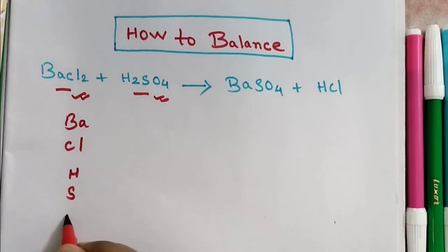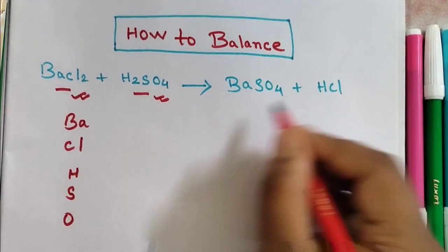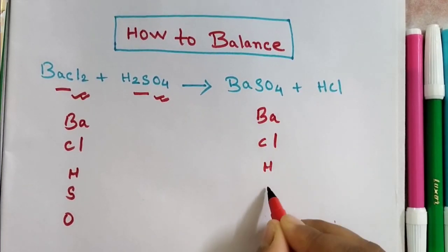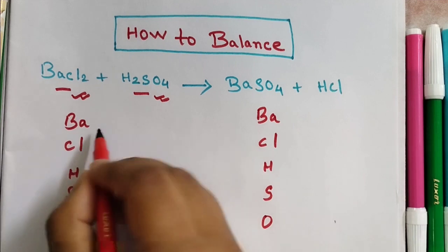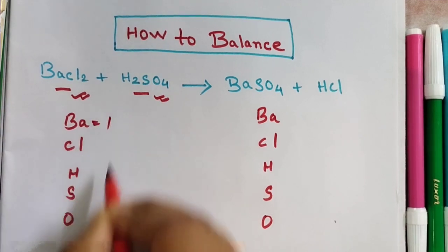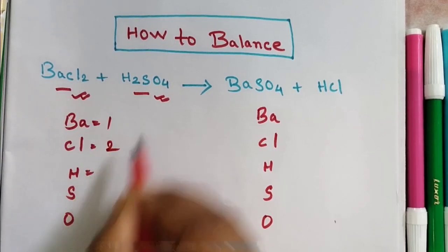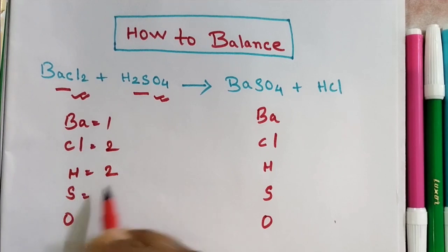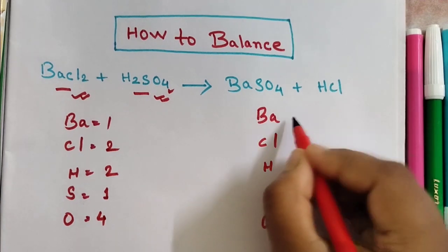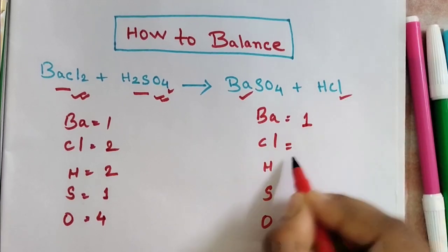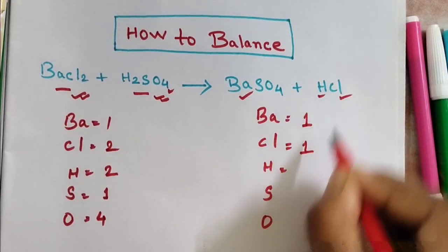Now count the number of atoms. Here, Ba is 1, Cl is 2, hydrogen is 2, sulfur is 1, and oxygen is 4. Now for the right-hand side: Ba is 1, Cl is 1, hydrogen is 1, sulfur is 1, and oxygen is 4.